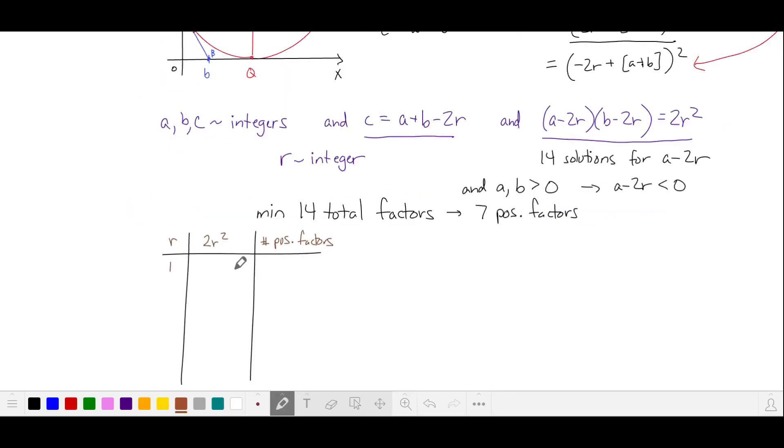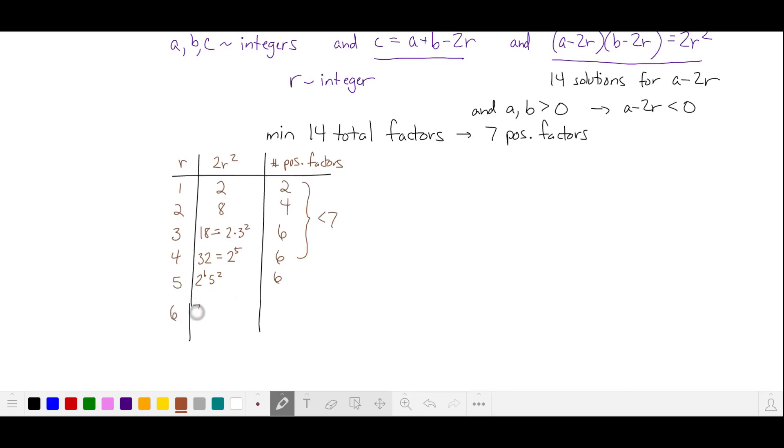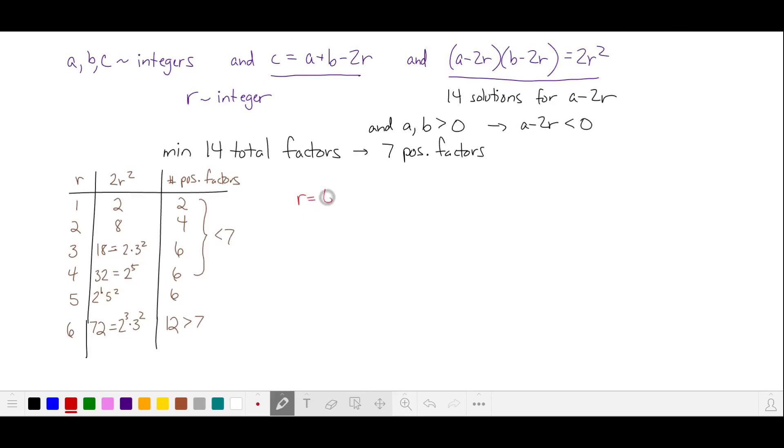So completing this table, when R is equal to 1, 2R squared is 2. And the number of positive factors is 2. When R is 2, 2R squared is 8, gives us 4 positive factors. When R is 3, 2R squared is 18. This gives us 6 factors. When R is 4, that's 32, or 2 to the 5th, also 6 factors. These won't give us 14 solutions. Finally, let's try R equals 6. 2R squared is 72. This gives us 12 positive factors. So this could potentially give us the 14 factors that we need.